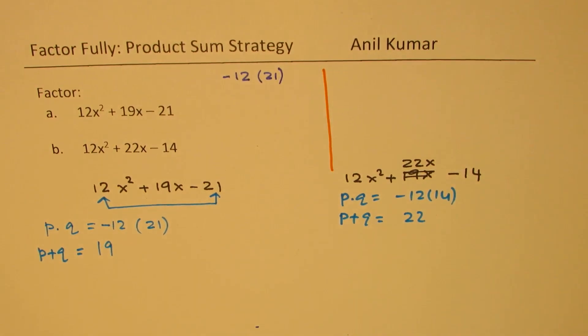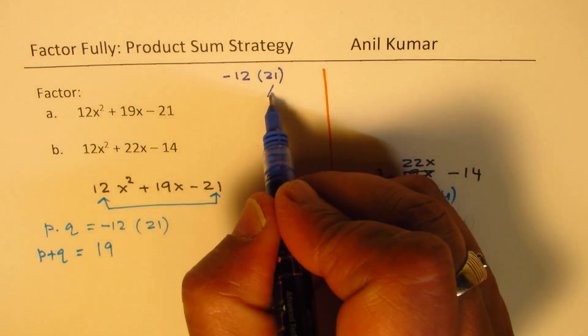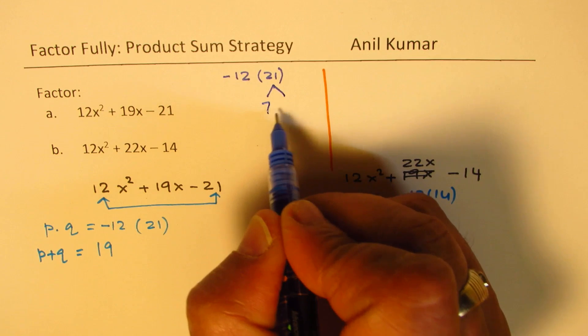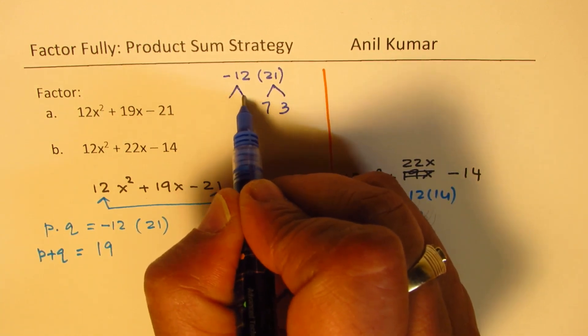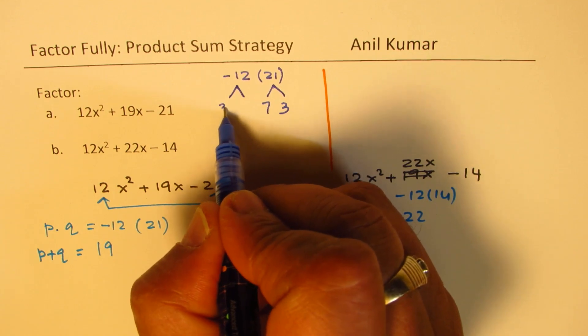Now, if I write down their factors, in that case, we'll always get what we need. So for example, 21 could be factored as 7 and 3. And as far as 12 is concerned, we could factor this as 3 and 4.